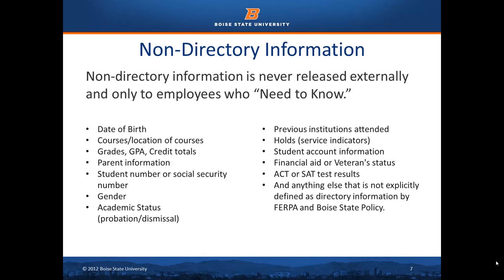Non-directory information may never be released externally and only to employees who need to know in order to perform their jobs. Non-directory information may be released to a student once the student is properly identified. Some examples of non-directory information as defined by FERPA and Boise State policy are: date of birth, courses or location of courses, grades, GPA, credit totals, parent information, student number or social security number, gender, academic status such as probation or dismissal, previous institutions attended, holds, service indicators, student account information, financial aid or veteran status, ACT or SAT test results, and anything else not explicitly defined as directory information by FERPA and Boise State policy.